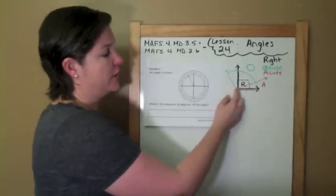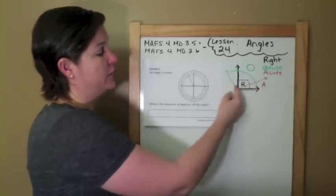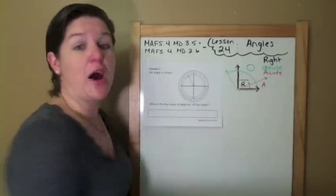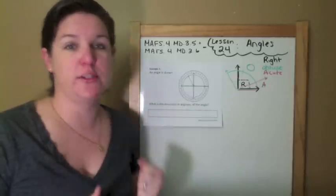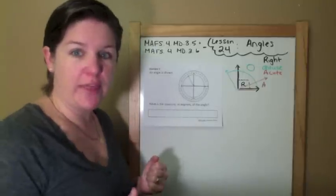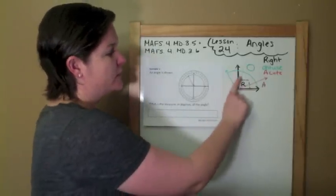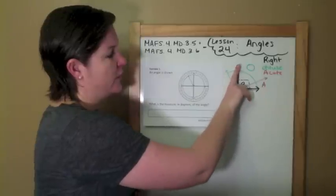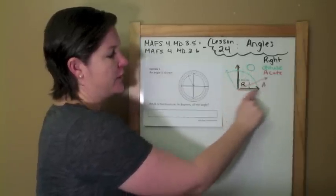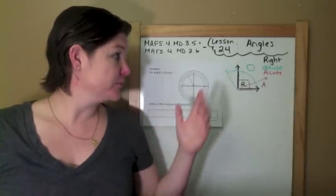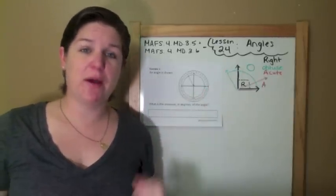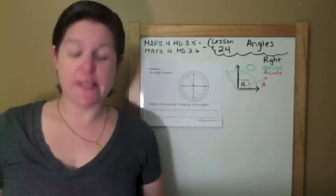Anything greater than a right angle, like the green right here, would be an obtuse angle. An obtuse angle! It's bigger. It's larger than a right angle. And anything smaller than a right angle, like where my red is right here, my red angle is an acute angle. So I'm just going to leave this diagram up as we proceed forward in today's lesson.